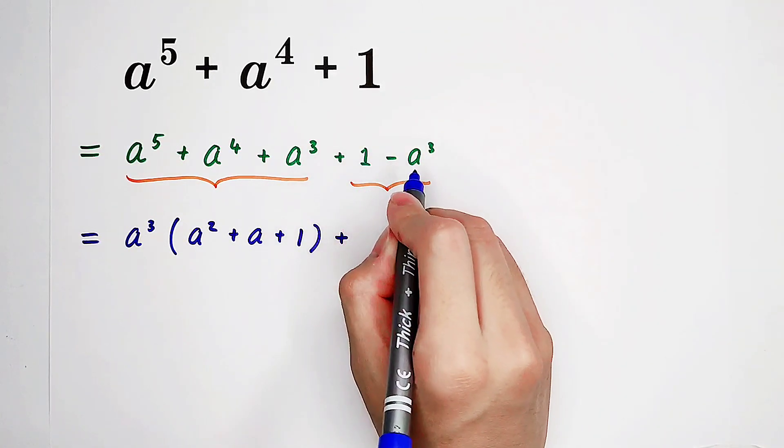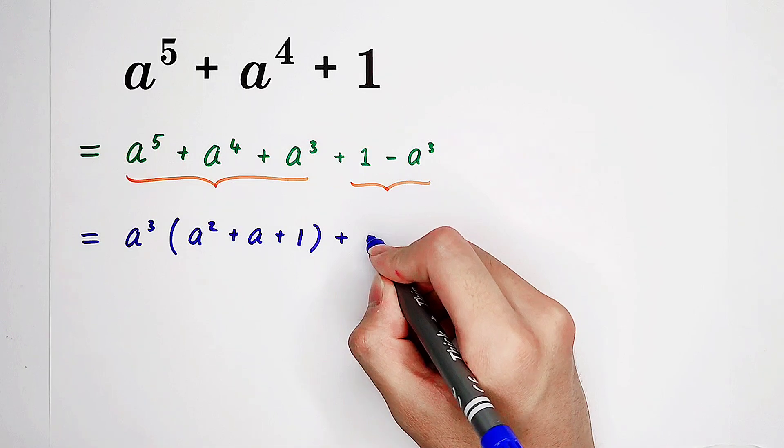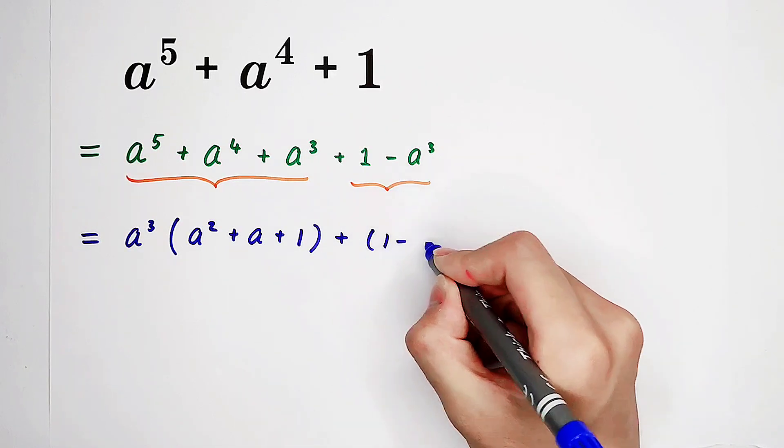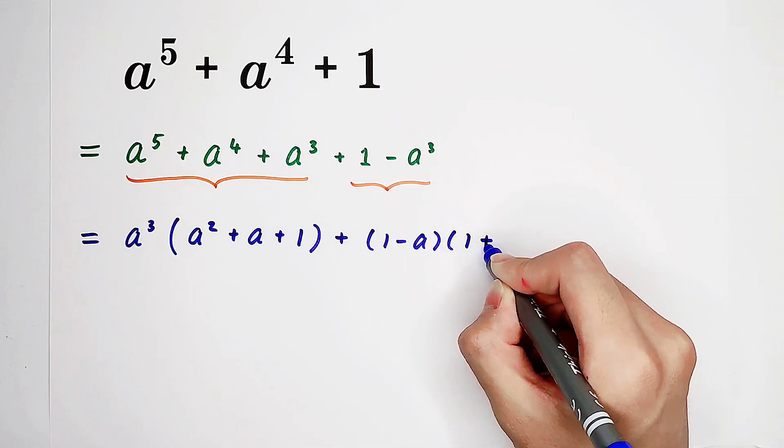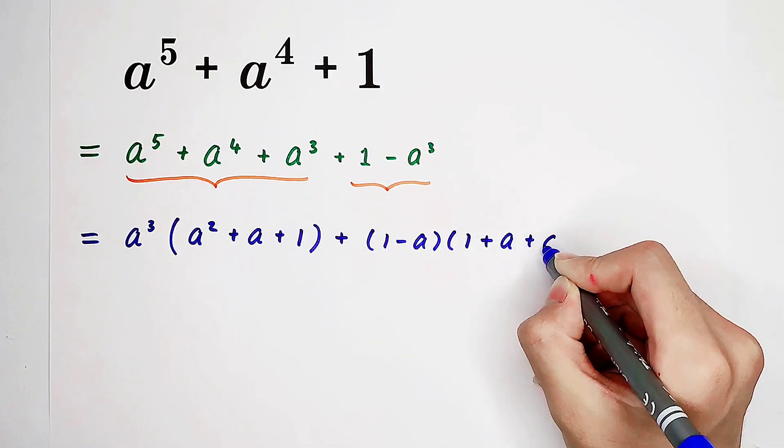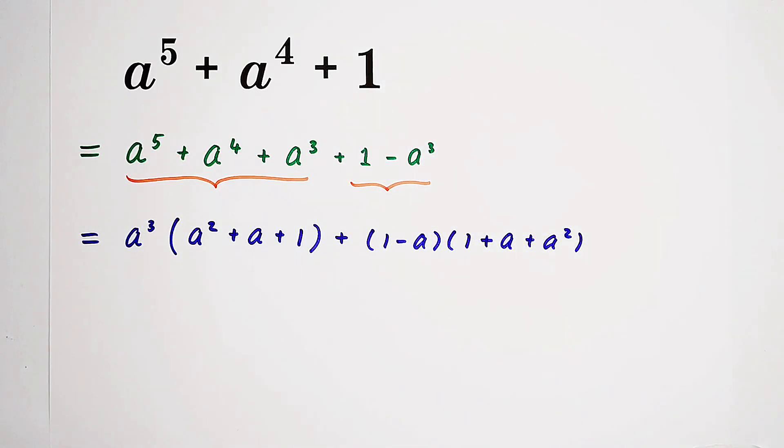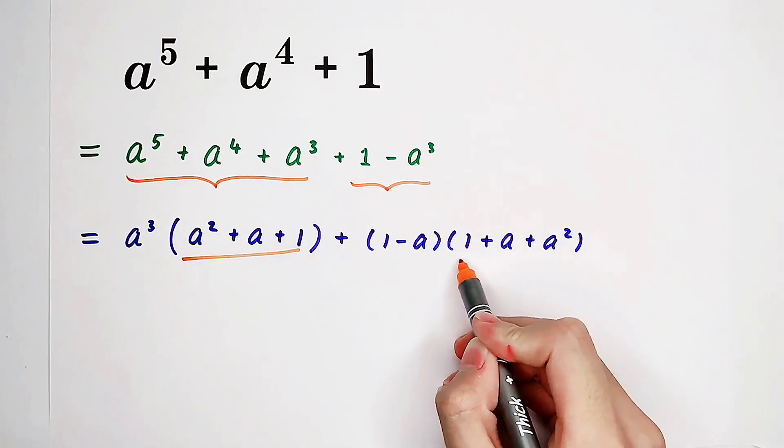Here it can also be factorized. It is what? 1 minus a times 1 squared is 1, plus a, then plus a squared. Now you can clearly see that these two sections are equal.